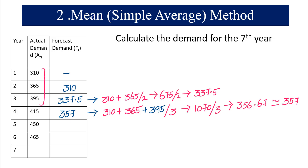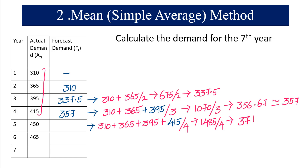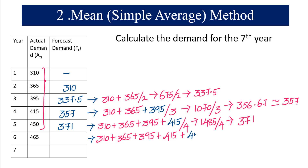For the fifth year we take the last four years' data: 310 plus 365 plus 395 plus 415 divided by 4. This gives us 1485 divided by 4, which equals 371. For the sixth year we take the last five years' data: 310 plus 365 plus 395 plus 415 plus 450 divided by 5. This gives us 1935 divided by 5, which equals 387. The demand for period 6 is 387.